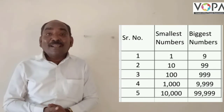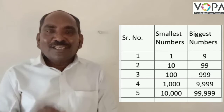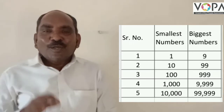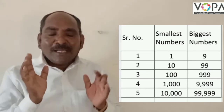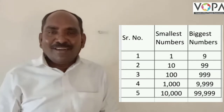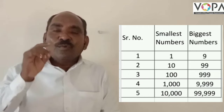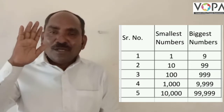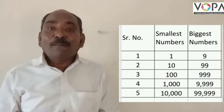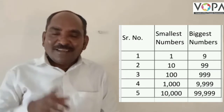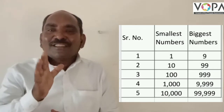Now, how can we get the 3-digit smallest number? In 99, you have to add only 1. When you add only 1 and make the addition with carry, you get 100. That means a 3-digit number — 1, 2, 3 digits. The smallest 3-digit number is 100. And the biggest 3-digit number is 999.